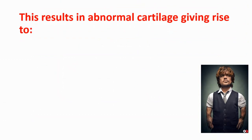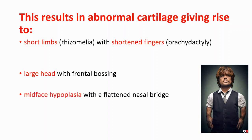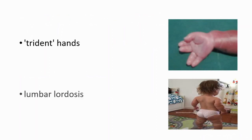Achondroplasia results in abnormal cartilage, giving rise to short limbs — also known as rhizomelia — with short fingers (brachydactyly). There is also a large head with frontal bossing, as you can see from Peter Dinklage, mid-face hypoplasia with a flattened nasal bridge, and trident hands. Lumbar lordosis, which is the inward curve of the lumbar spine, is also common.